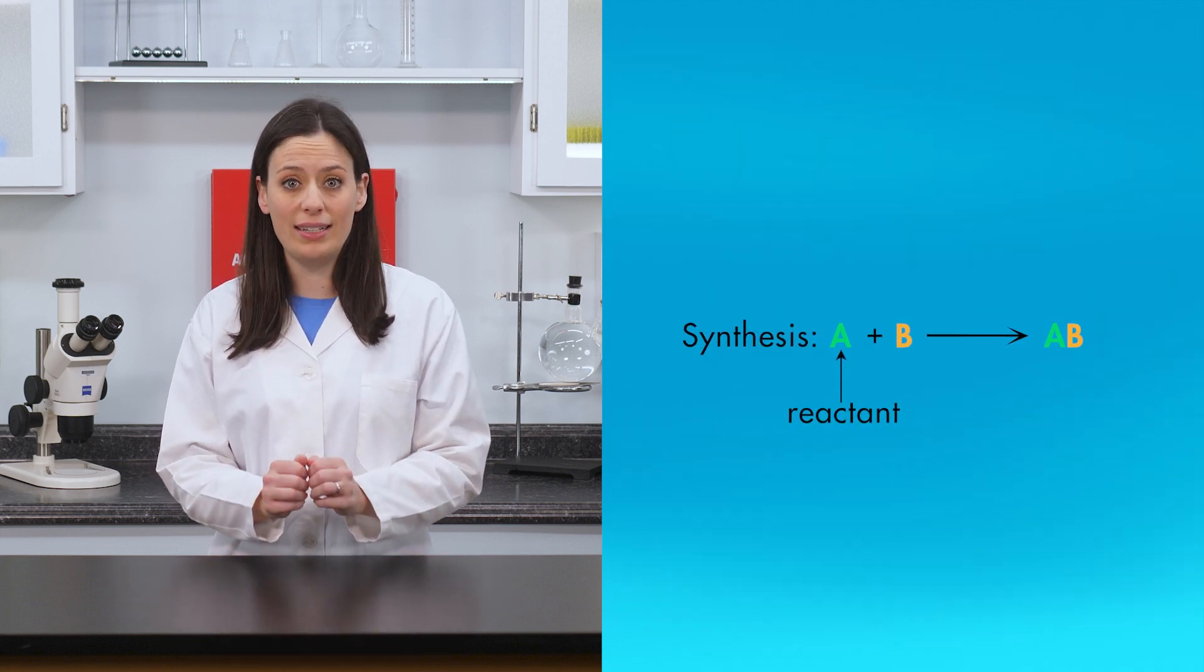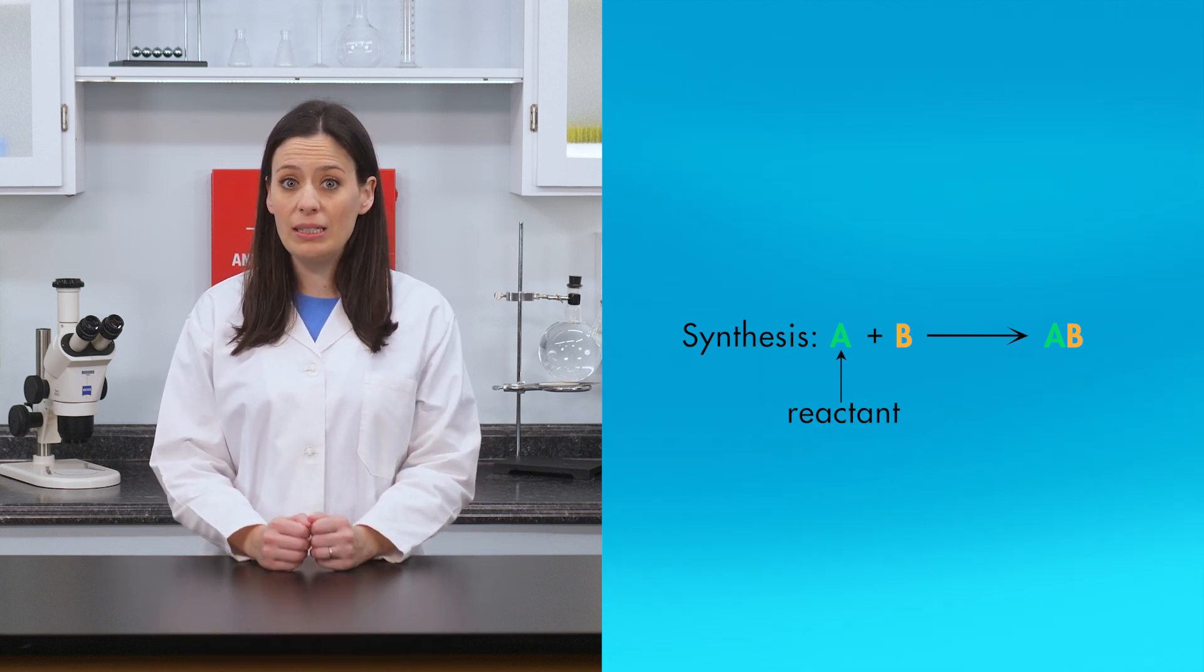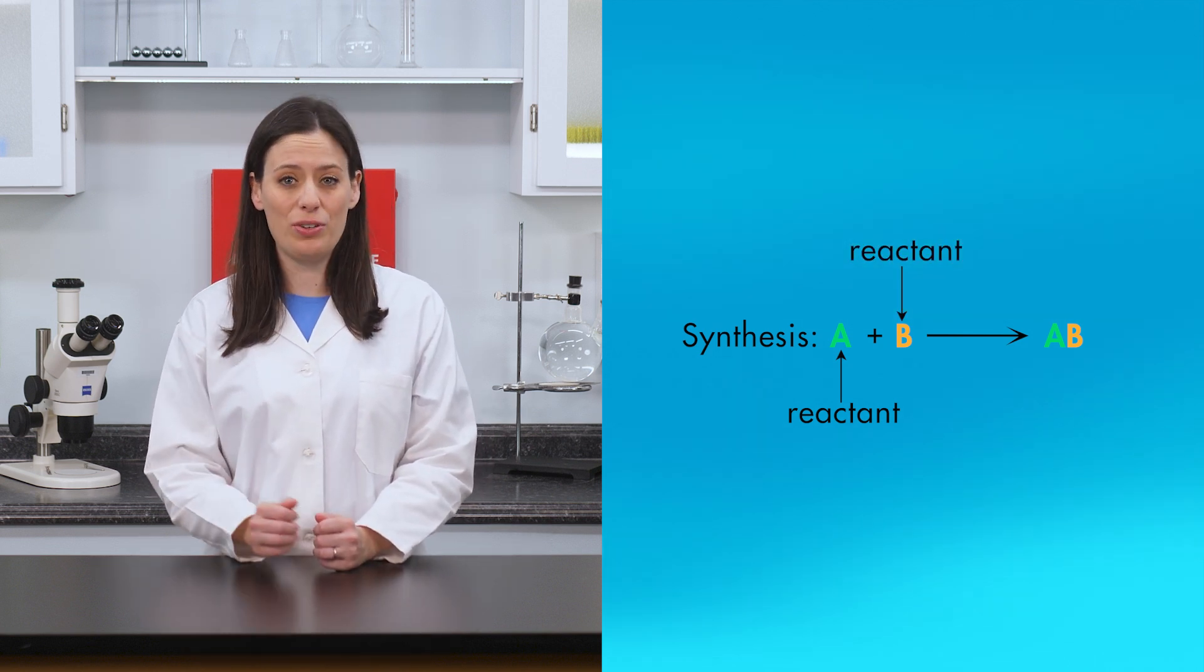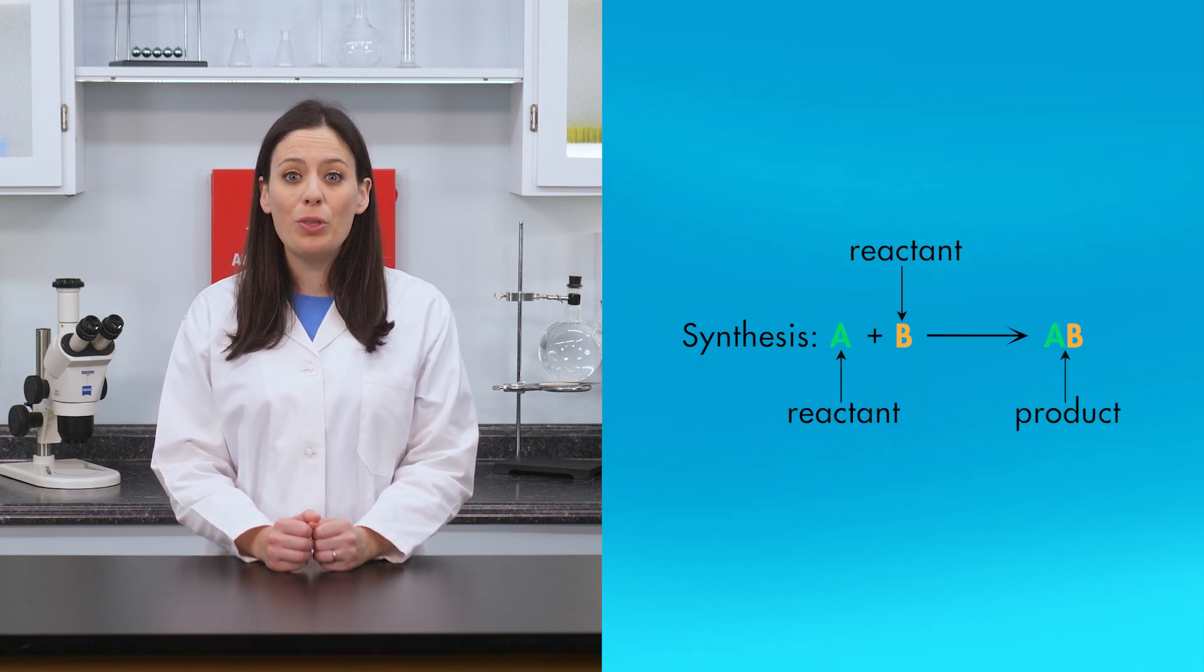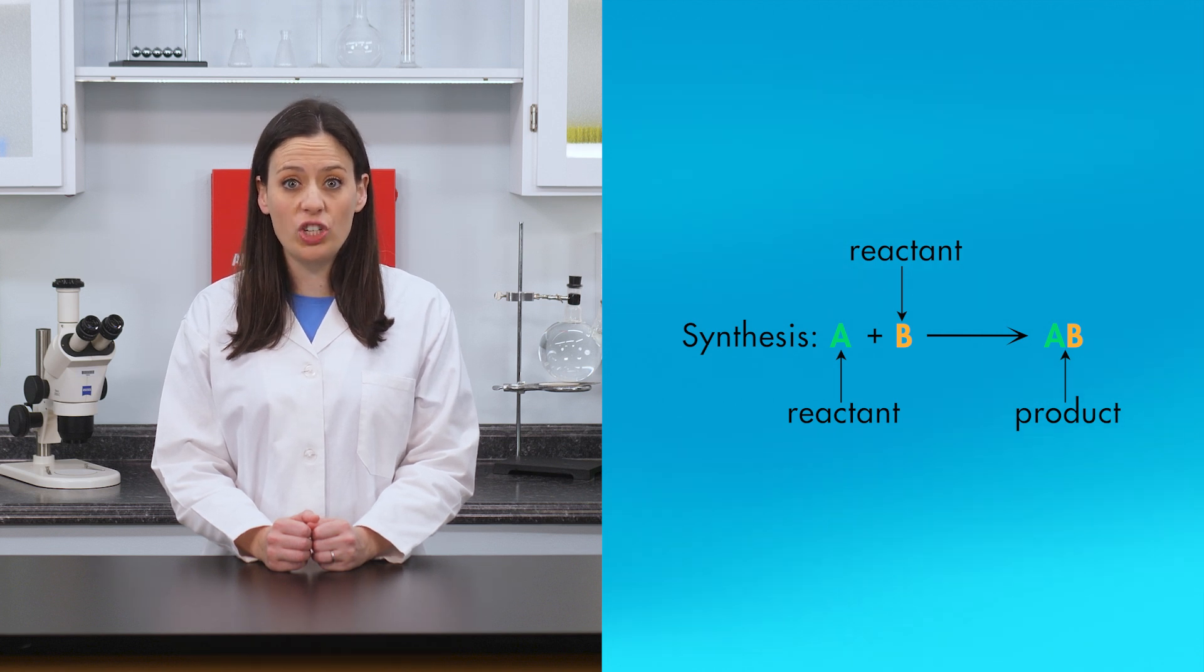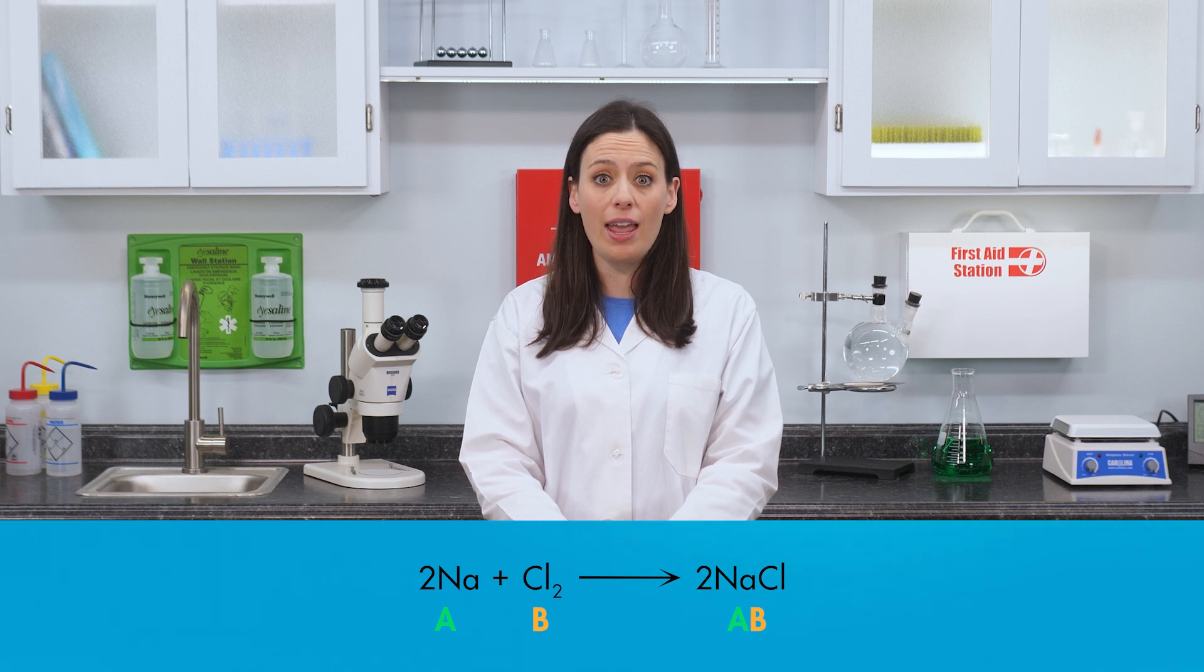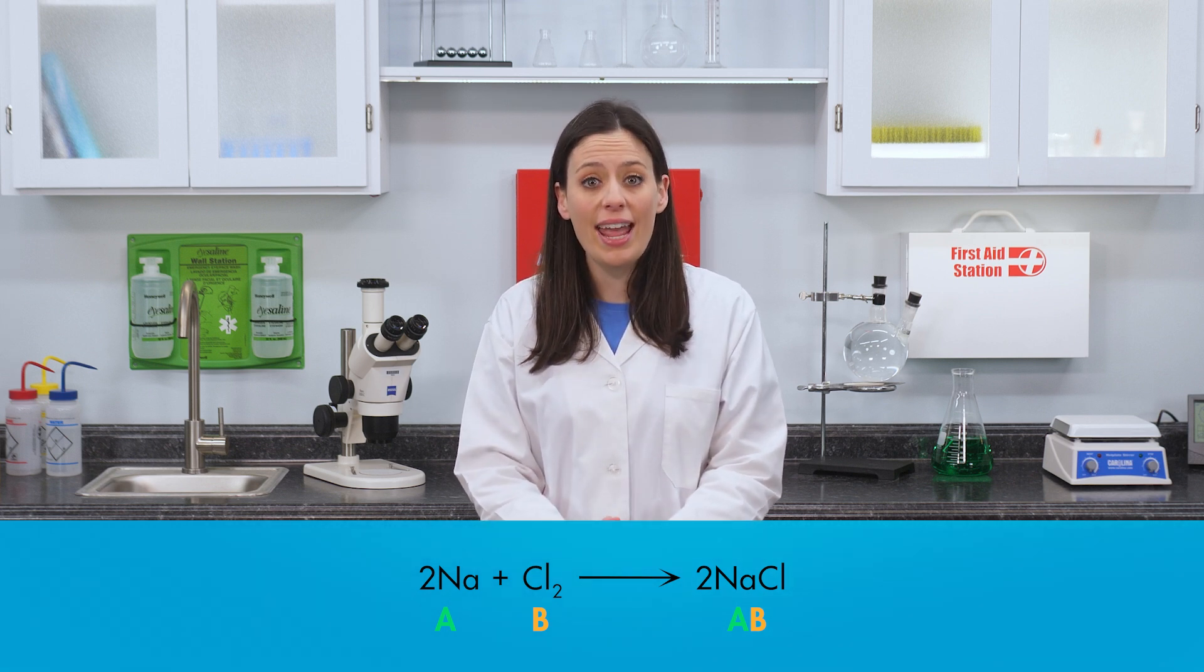The general form of a synthesis reaction is A plus B yields AB. A is the first reactant, which could be an element or a compound. B is the second reactant, which could also be an element or a compound. The reactants combine to form a single product, AB. The product of a synthesis reaction will always be a compound. The chemical equation for the synthesis of sodium chloride is 2Na plus Cl2 yields 2NaCl.